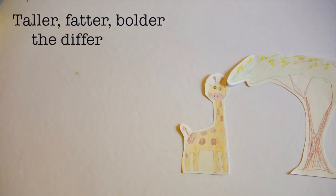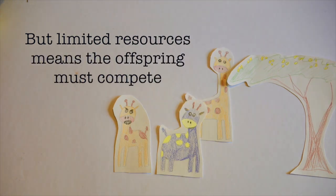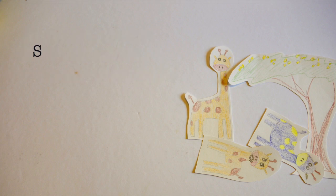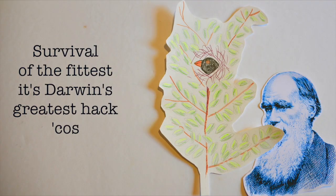Full of fat or bolder, the differences are neat. But limited resources mean the offspring must compete. Food and shelter, there's not enough, then predators attack. Survival of the fittest, Darwin's greatest hack.